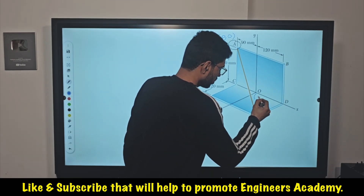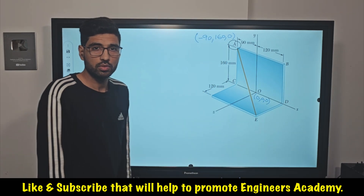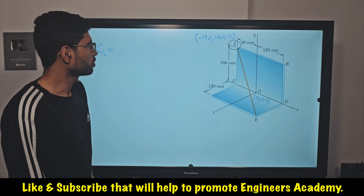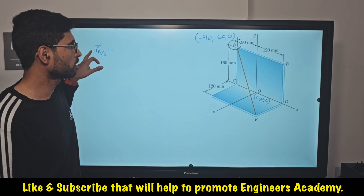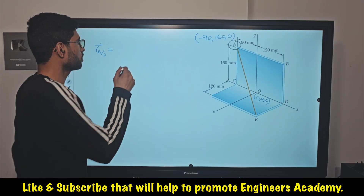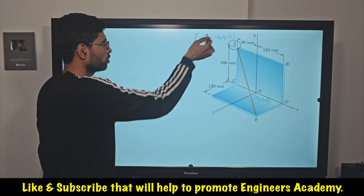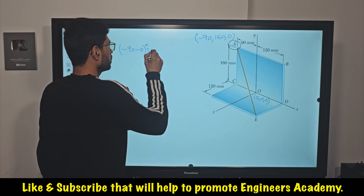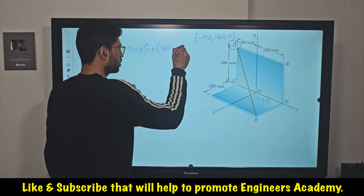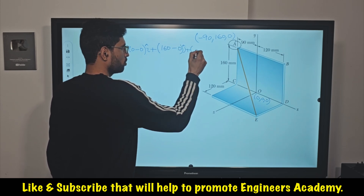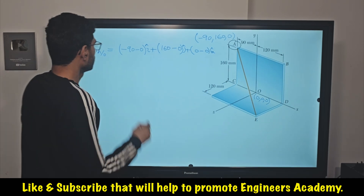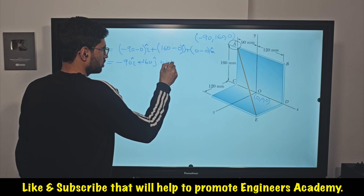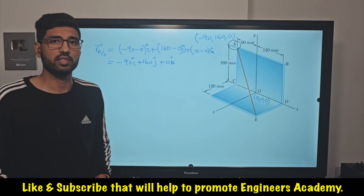For the origin O, we know that it is always at (0, 0, 0). To find the position vector of A relative to O, we subtract the coordinates of O from A. So we write: (−90 − 0)i + (160 − 0)j + (0 − 0)k, which gives us minus 90 i plus 160 j plus 0 k. This is how we can find the position vector by writing the coordinates of both points.